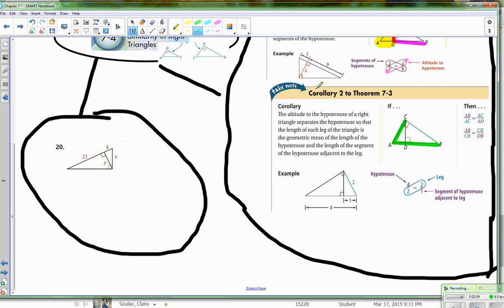So let's see how that plays out here. AB over AC, that's the hypotenuse and the leg, is equal to AC over AD. AB over CB is equal to CB over DB.